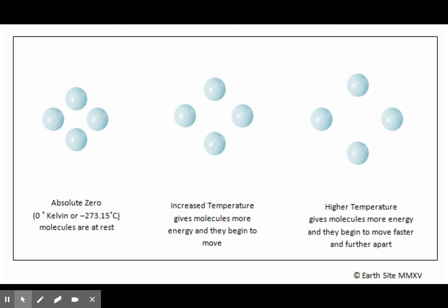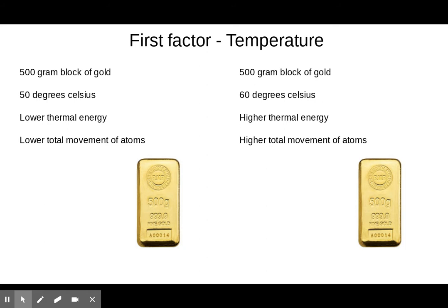Here's a sample problem. Two out of three things are the same: 500 grams on the left, 500 grams on the right — the amount is the same. Gold on the left, gold on the right — so the type is the same. But the one on the left is 50 degrees Celsius and the one on the right is 60 degrees Celsius. Two identical blocks of gold at different temperatures — the one on the right is going to have more movement of its atoms, and therefore more thermal energy.